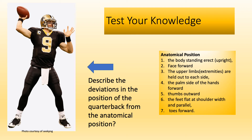Is the body standing erect? Although it's leaning a little bit forward, but yes, it's standing erect. Is the face forward? No — Drew Brees is looking towards his left. Are the upper limbs held out to each side? No, they are not. Is the palm side of the hands forward? As you can see, the palms are almost looking upward, and that is a deviation from anatomical position. And thumbs should be outward — here, the thumbs are inward, looking to the middle side.